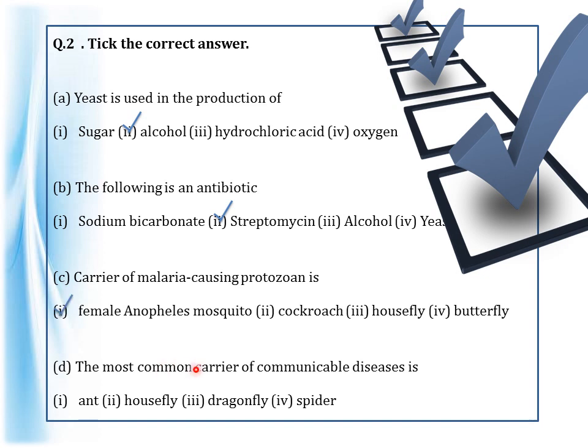The most common carrier of communicable diseases is — ant, housefly, dragonfly, or spider? The answer is housefly. Housefly is the most common carrier. You can find housefly everywhere.